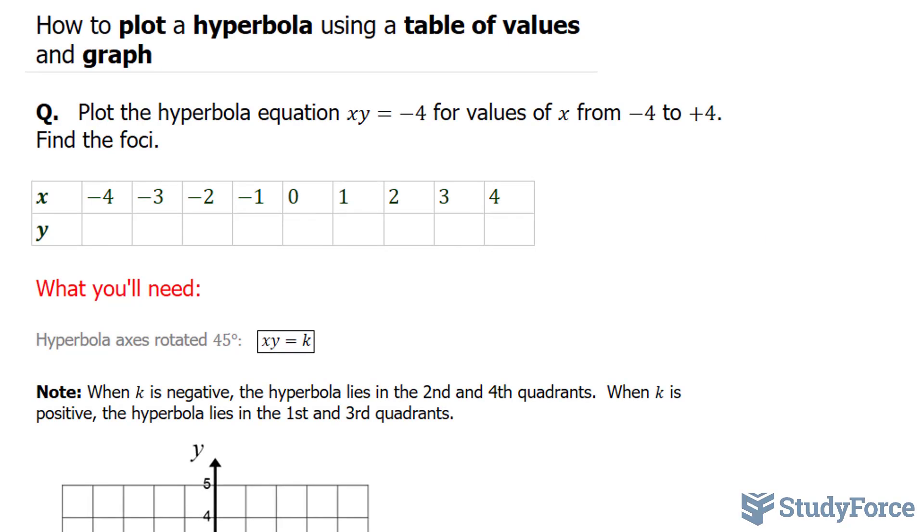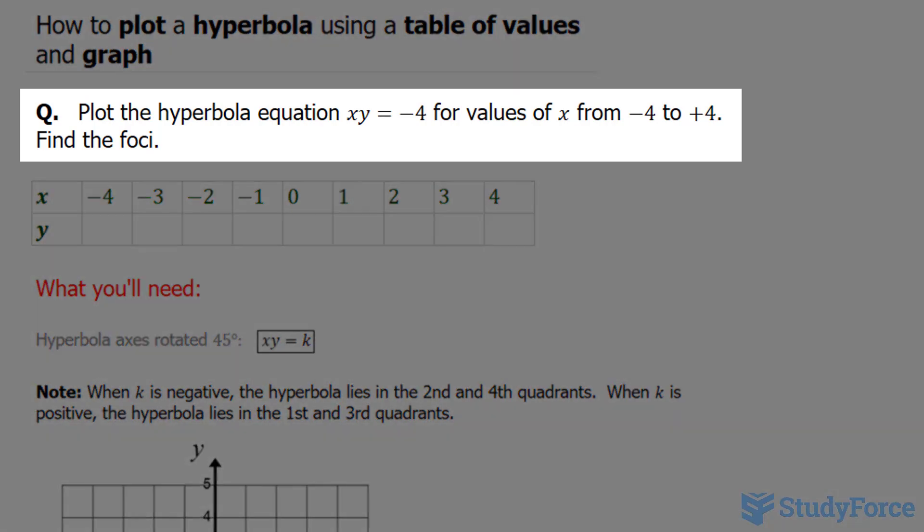In this video, I'll show you how to plot a hyperbola using a table of values and graph. The question reads: plot the hyperbolic equation x times y is equal to negative 4 for values of x from negative 4 to positive 4. Find the foci.